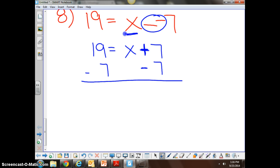I'm going to clean it up. This is what I refer to as the cleanup stage. 19 minus 7 is what, everybody? 12. Keep my equal signs lined up.